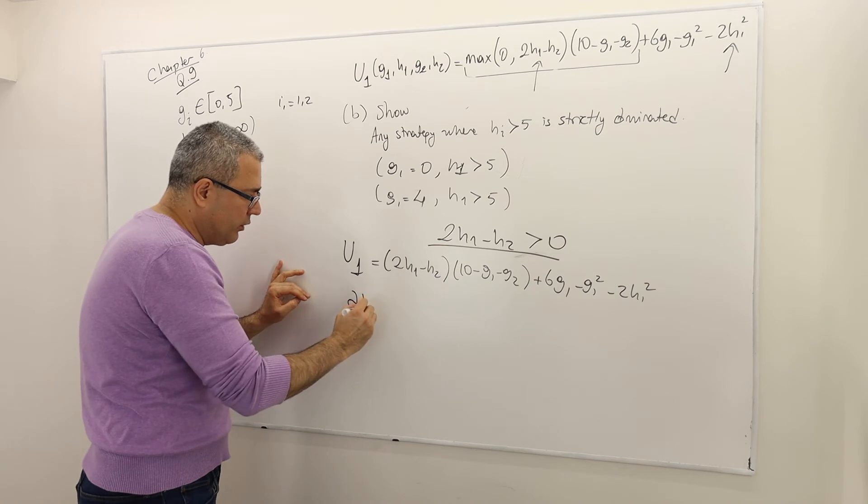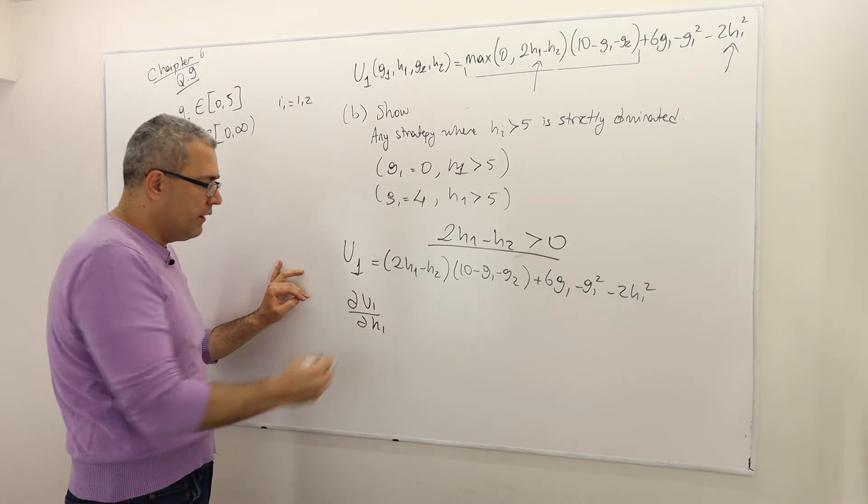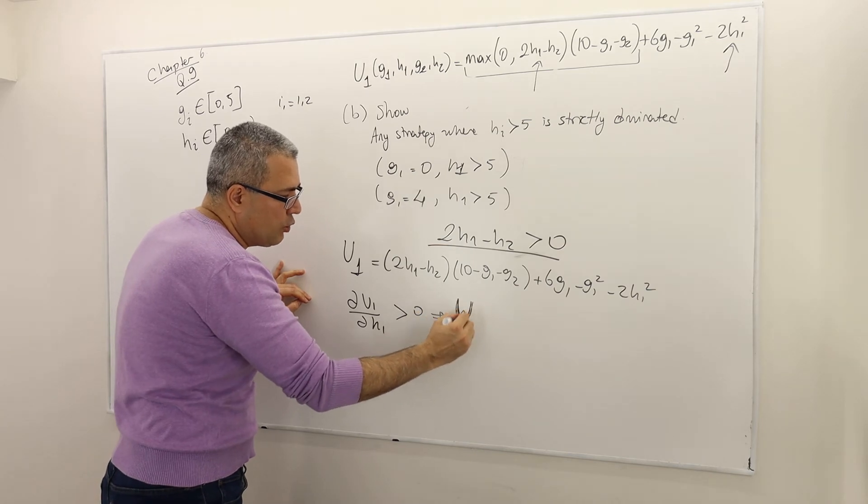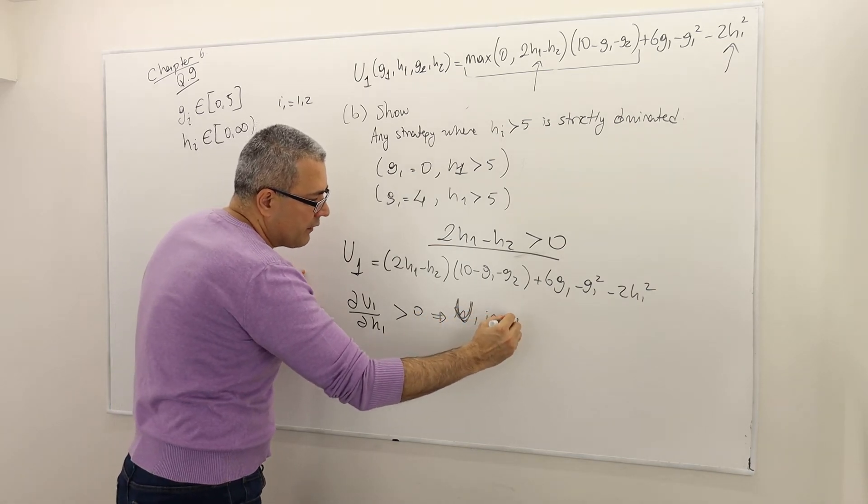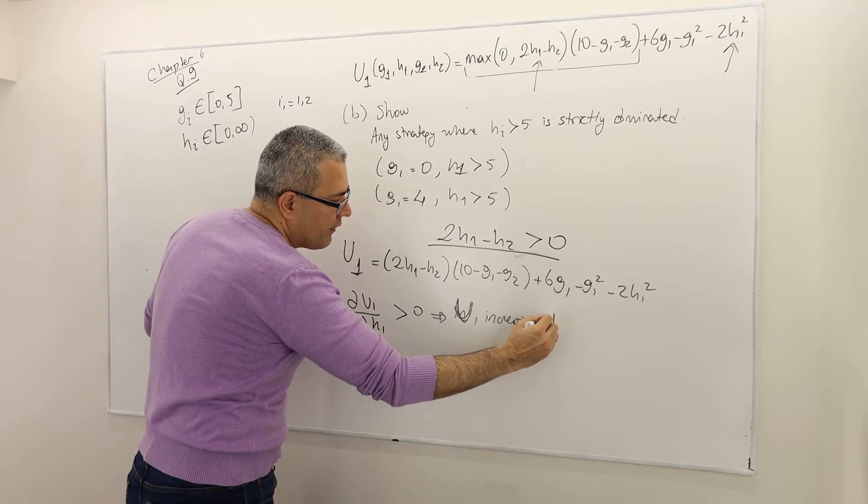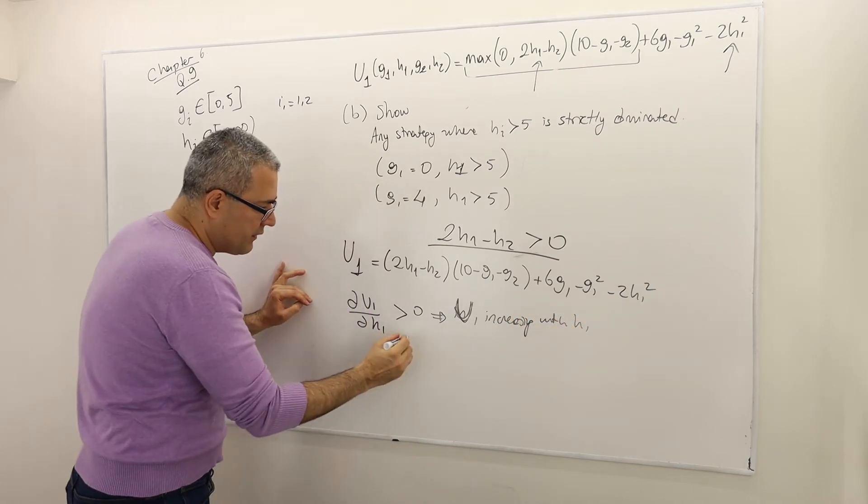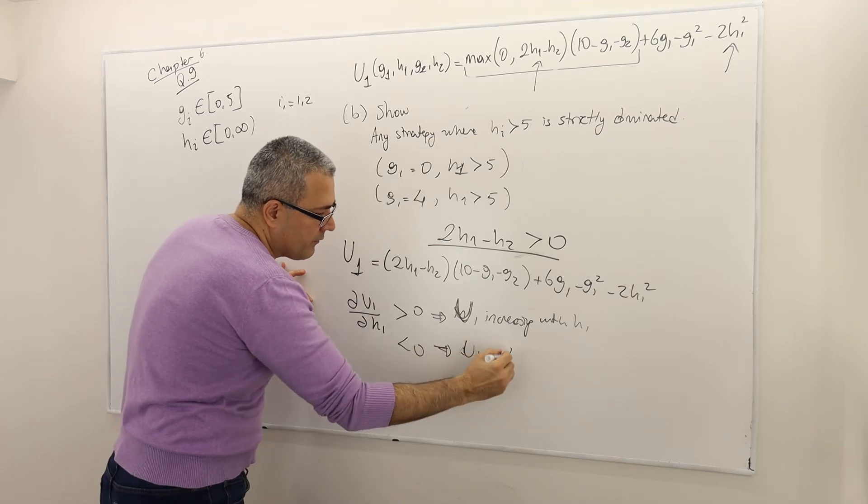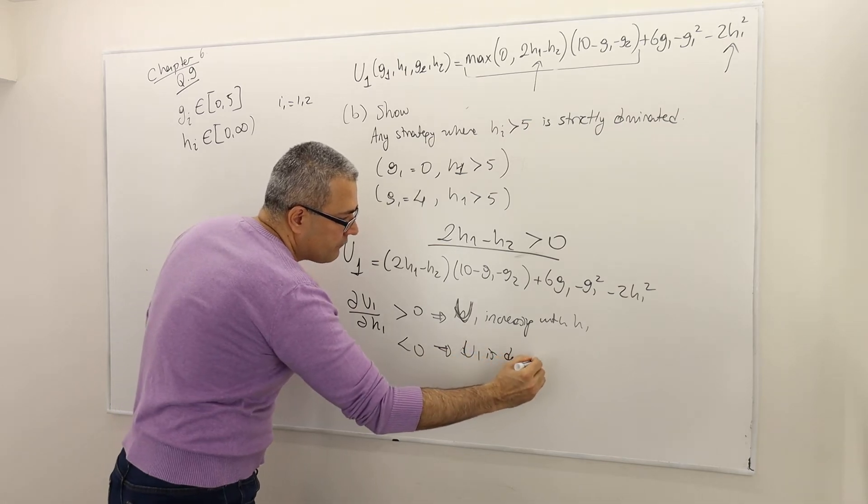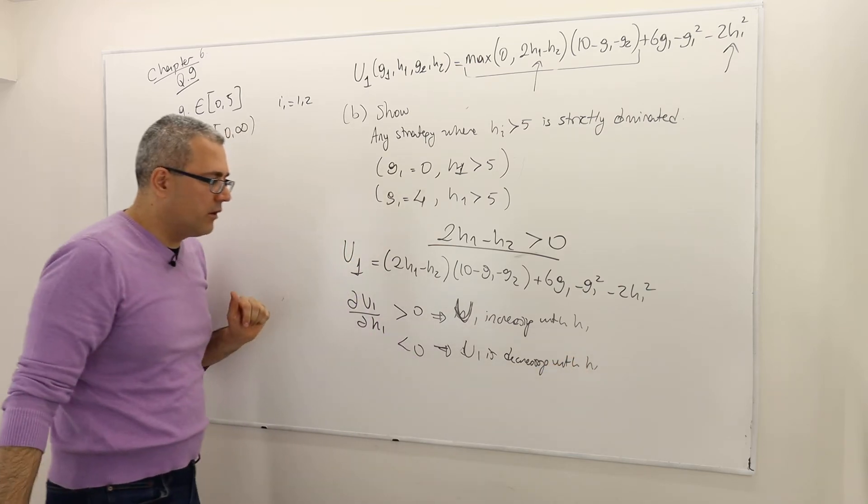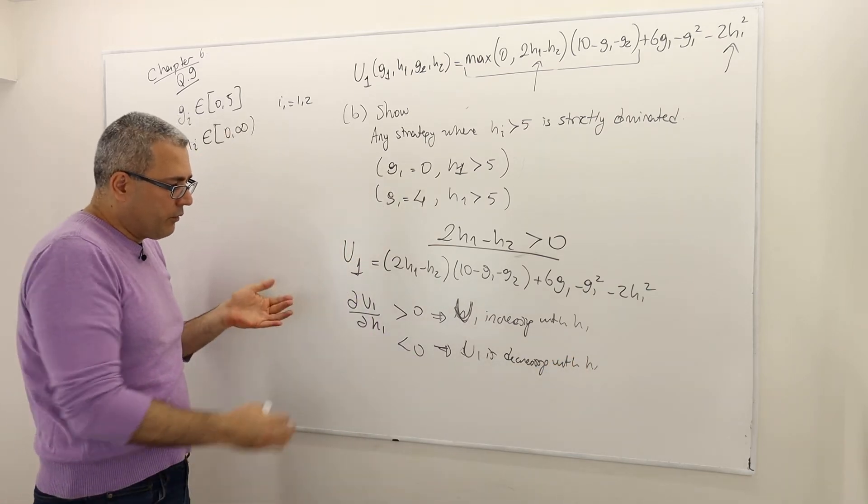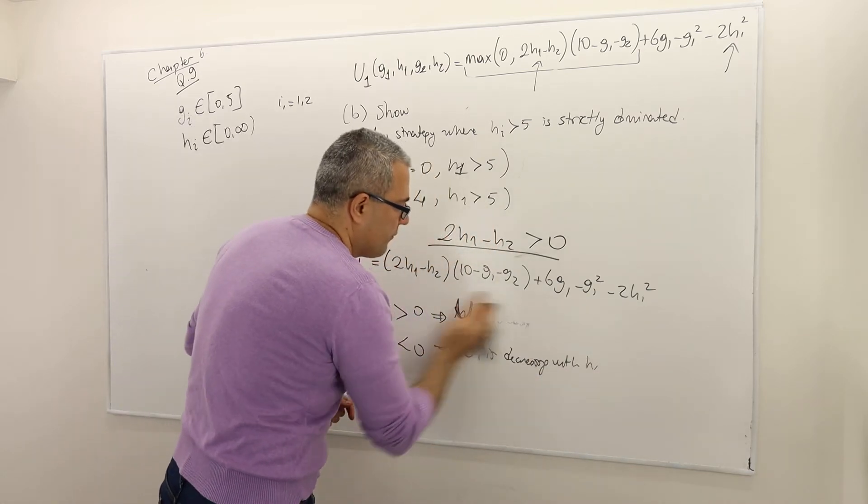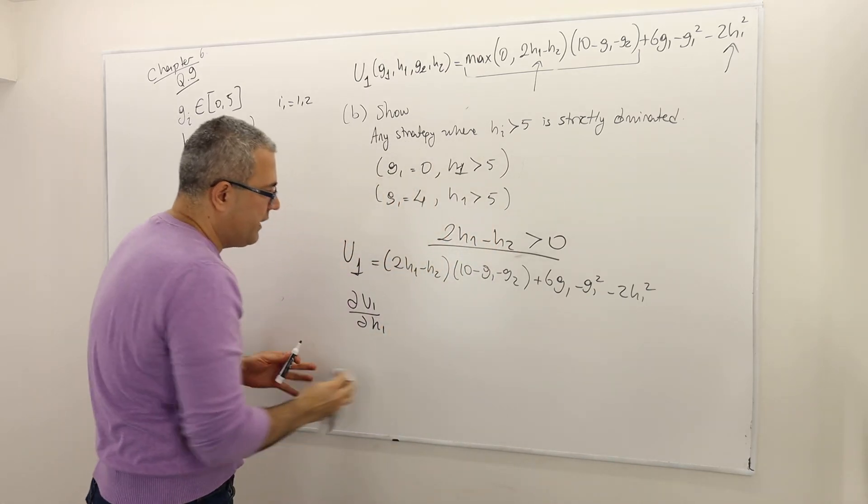So how do I understand whether a function increases or decreases with a parameter, H1? Well, I have to look at the partial derivative with respect to H1. If it is positive, it means the function, I mean, U1 is increasing with H1. If it is less than 0, it means it's decreasing. So U1 is decreasing with H1. All right. So, therefore, just look at the partial derivative of this guy with respect to H1.